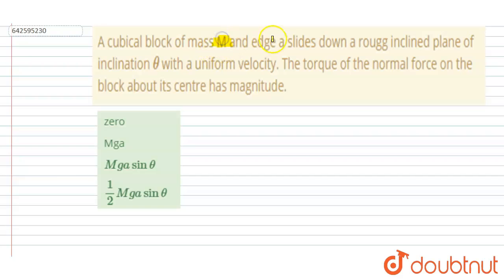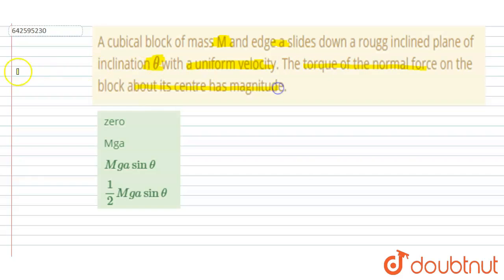Hello everyone. A block of mass m and height a slides on a rough inclined plane of inclination theta with constant velocity. You have to find out the torque of the normal force on the block about its center. What is the magnitude of that torque?